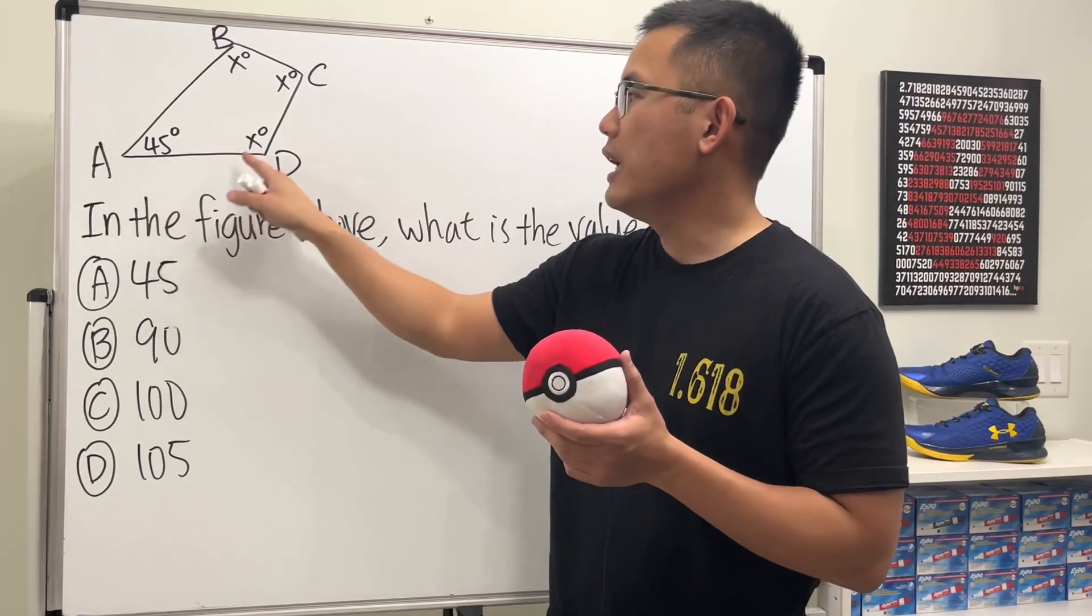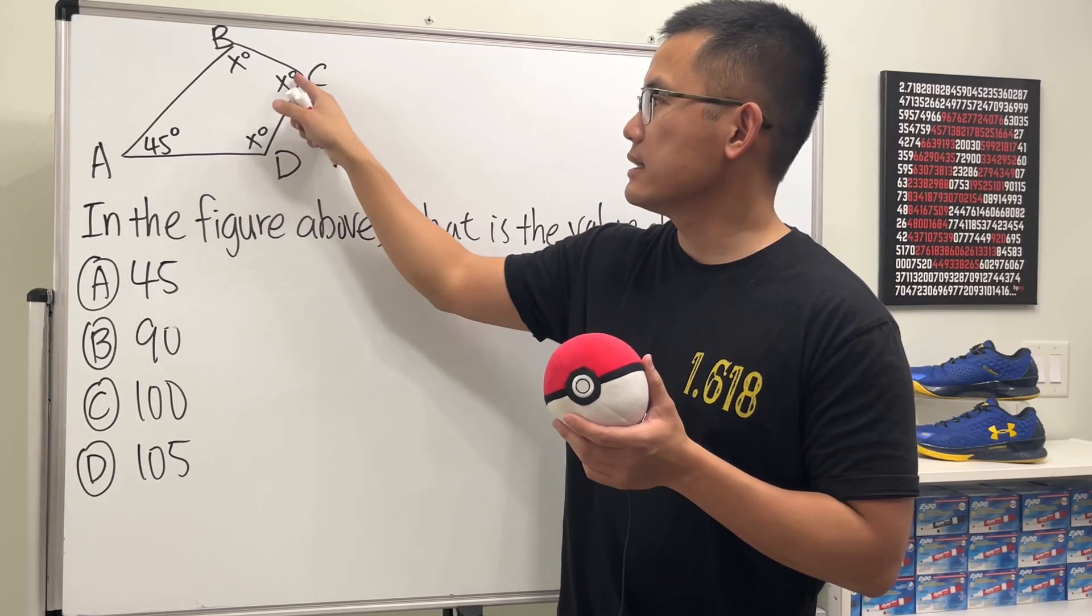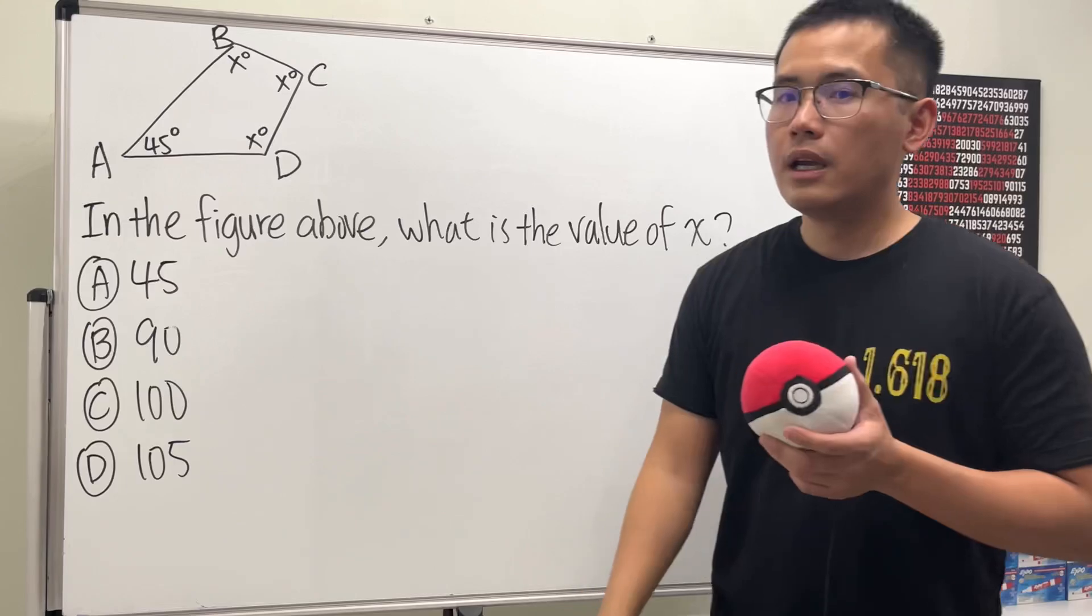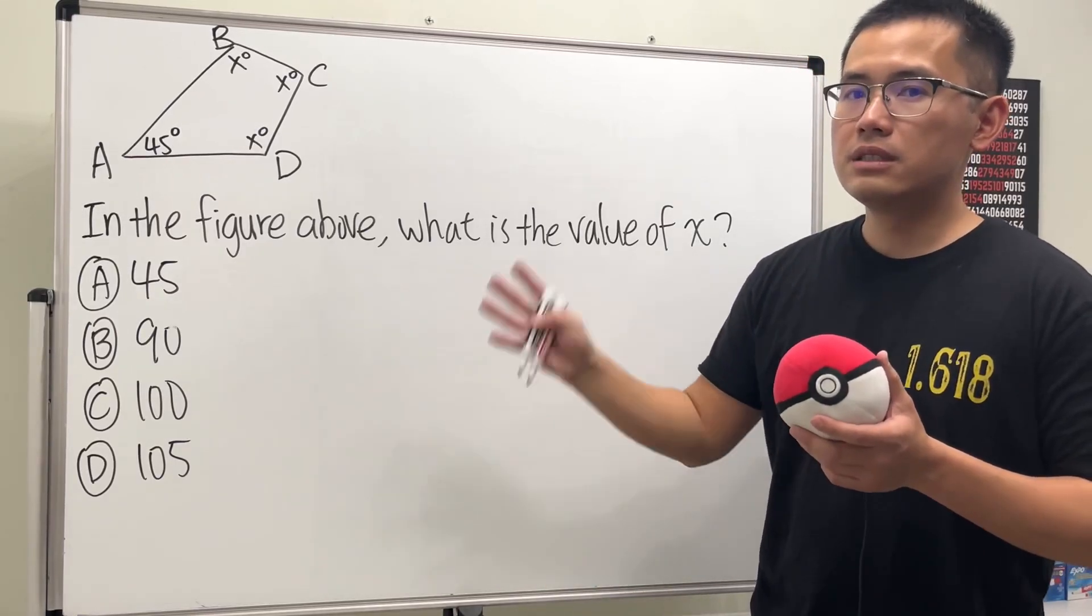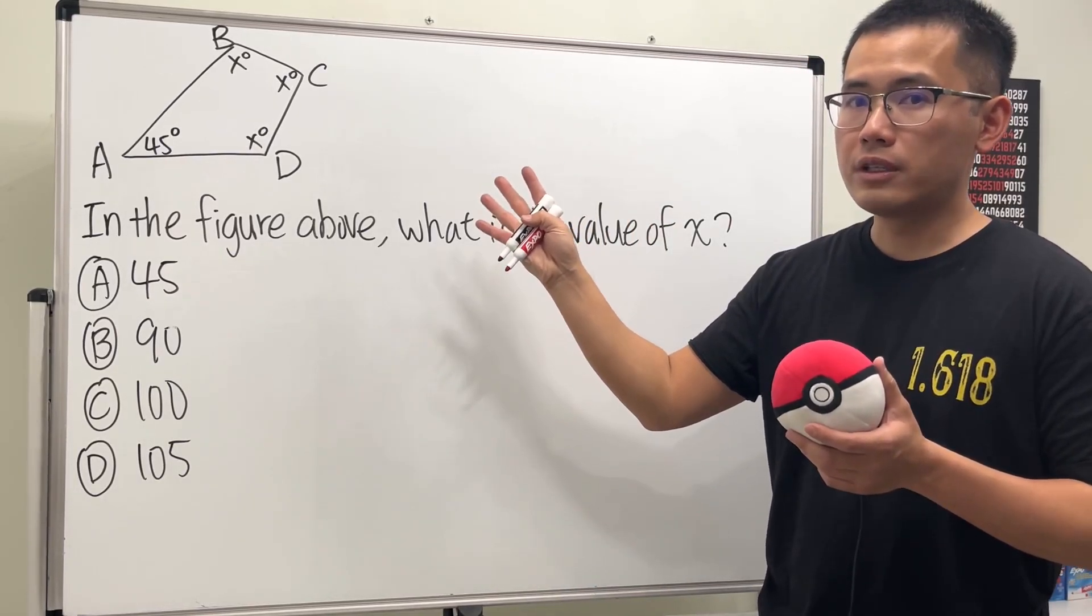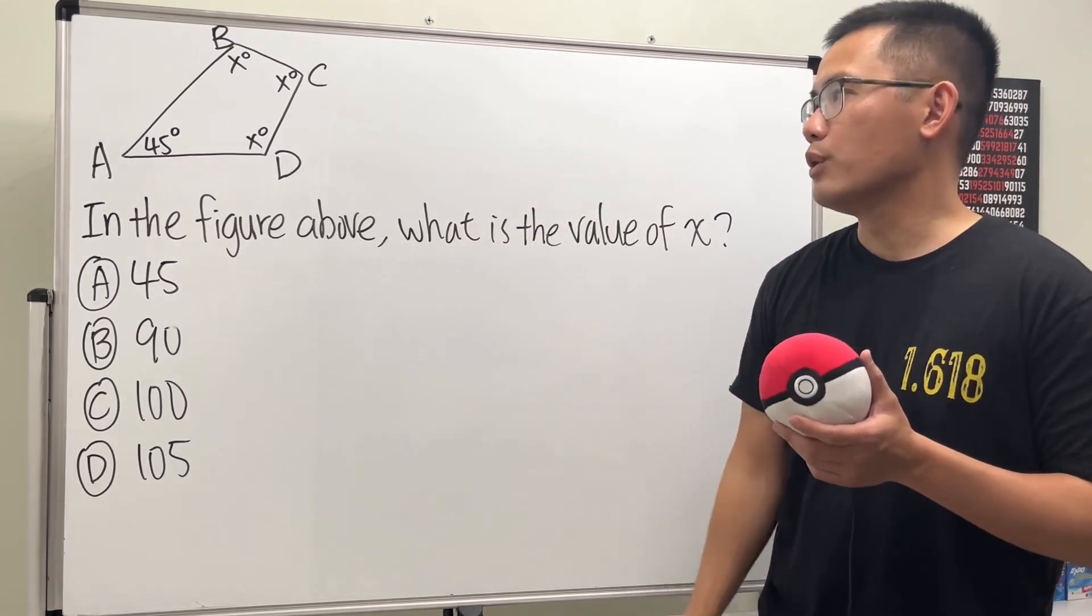We have 45 degrees here, and then the x degrees, and then x degrees, and also the x degrees. Notice that this is a four-sided polygon, or a quadrilateral, if you would like.